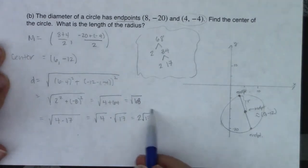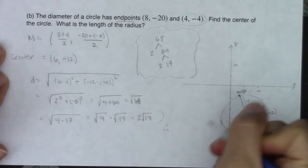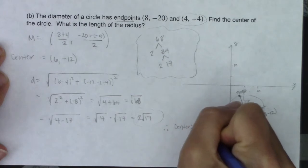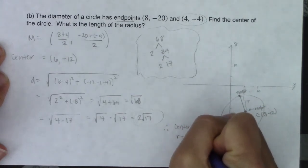So I can rewrite this as the square root of 4 times 17, which is the square root of 4 times the square root of 17, which is ultimately 2 root 17. So there is my radius. So I have that the center is 6 negative 12 and the radius is 2 root 17.